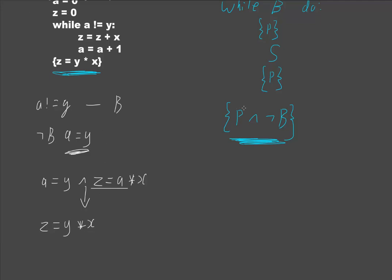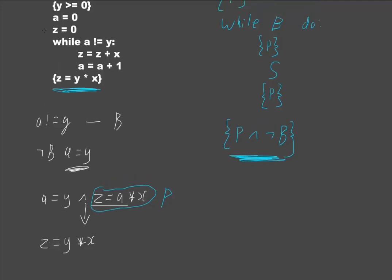Right, so if this, if this was p, hypothetically, if that was p, then that makes all of our problems go away, because that would mean that p and not b can guarantee our postcondition. So, the question is then, we want to go back up into this statement, and actually prove that this is p.